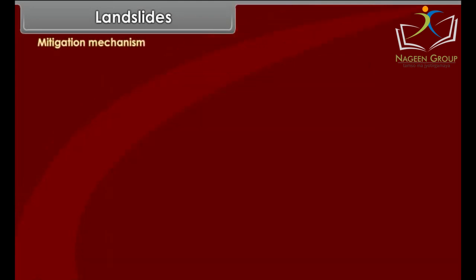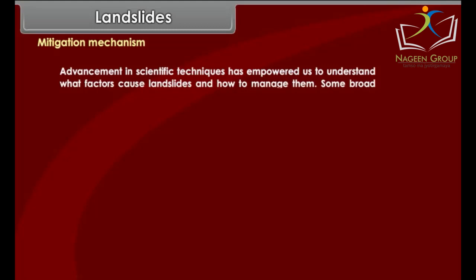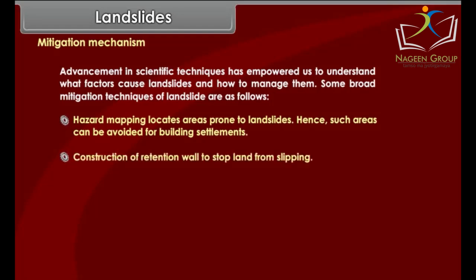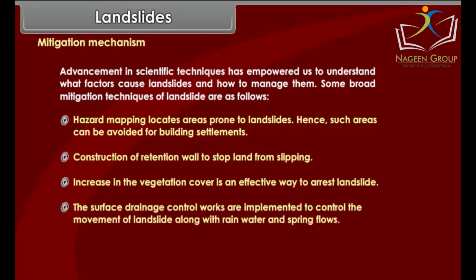Landslides are defined as the mass movement of rock, debris or earth down a slope. They often occur in conjunction with earthquakes, floods and volcanoes. A prolonged spell of rainfall can cause heavy landslide that can block river flow, and the bursting of such river blocks can cause havoc to downstream settlements. Mitigation techniques include hazard mapping to locate landslide-prone areas, construction of retention vaults to stop land from slipping, increasing vegetation cover, and surface drainage control works to control the movement of landslides along with rainwater and spring flows.